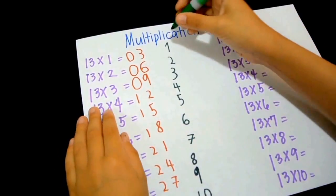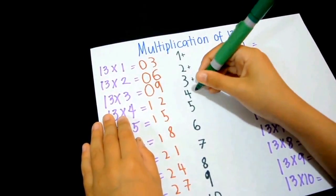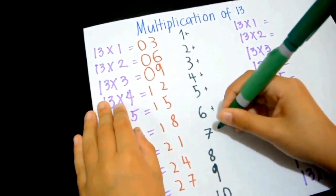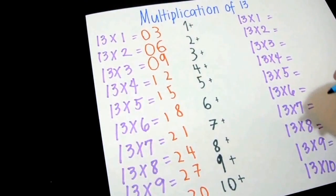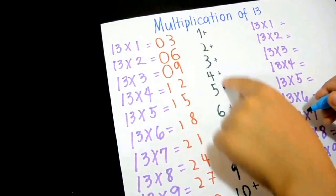Now add a plus here. Next, you write down the left numbers, but right here.